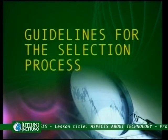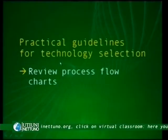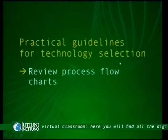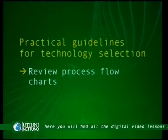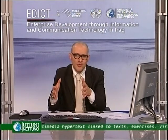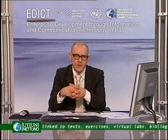All these considerations lead to the formulation of specific guidelines for the selection process. We have seen the definition of technology, the artifacts embedded in technology, and the factors — both internal and external — which influence such technology. Let's try to conclude by drawing some conclusions on the guidelines for the selection process. In very practical terms, practical guidelines for technology selection could start with: review process flowcharts. All processes could be pictured via flowcharts, and the revision of such flowcharts is important in order to assess the impact of the different technological alternatives.